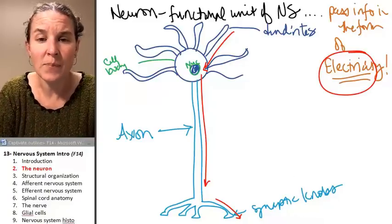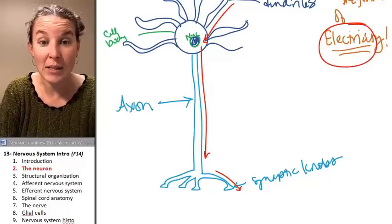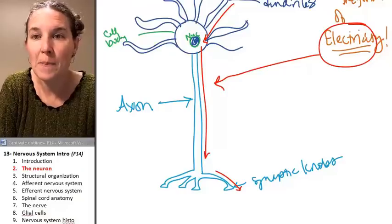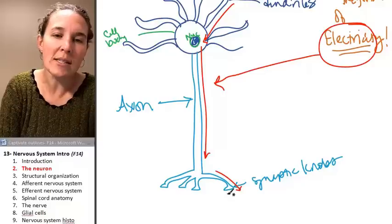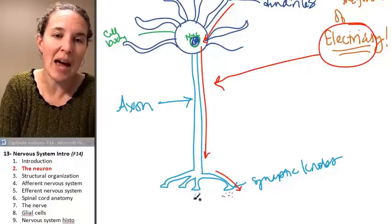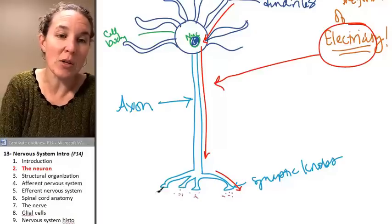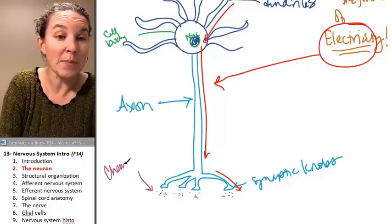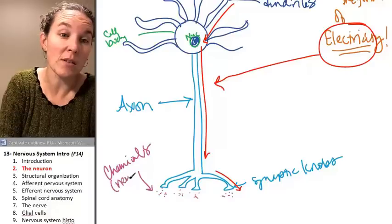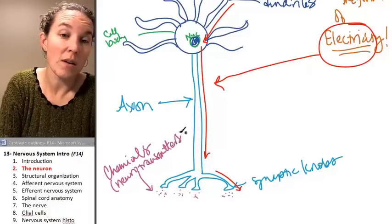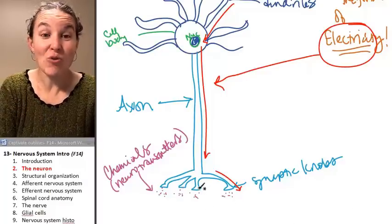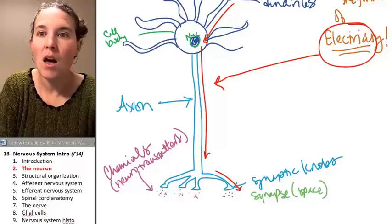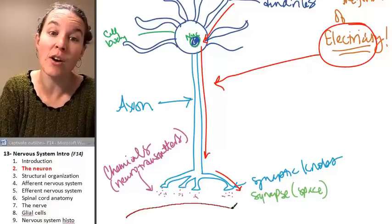Now, what happens to the information at the synaptic knobs? What happens at this point? We said that the information was electrical as it was passing through the neuron itself. True story, but it doesn't stay electrical forever. Once the information passes to the synaptic knobs, it has to be passed on chemically. And these chemicals are called neurotransmitters. And the neurotransmitters can cross a synapse. And the synapse is a space.